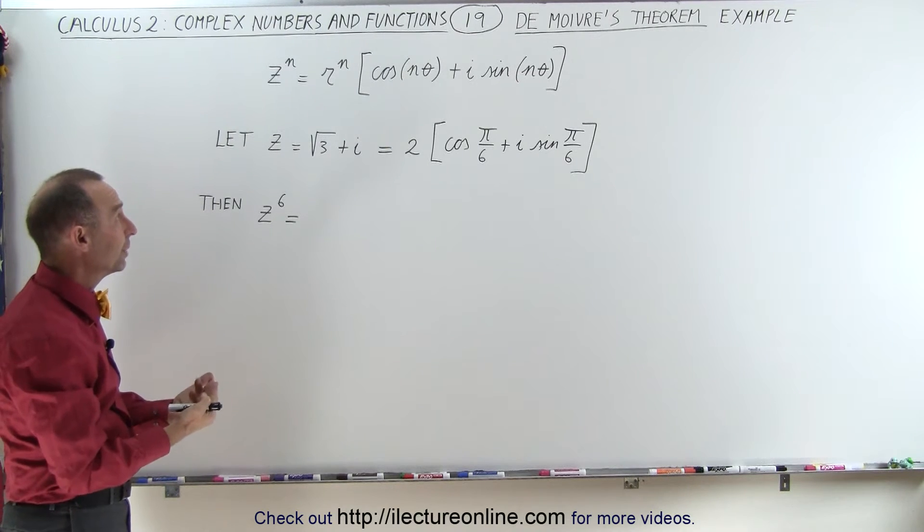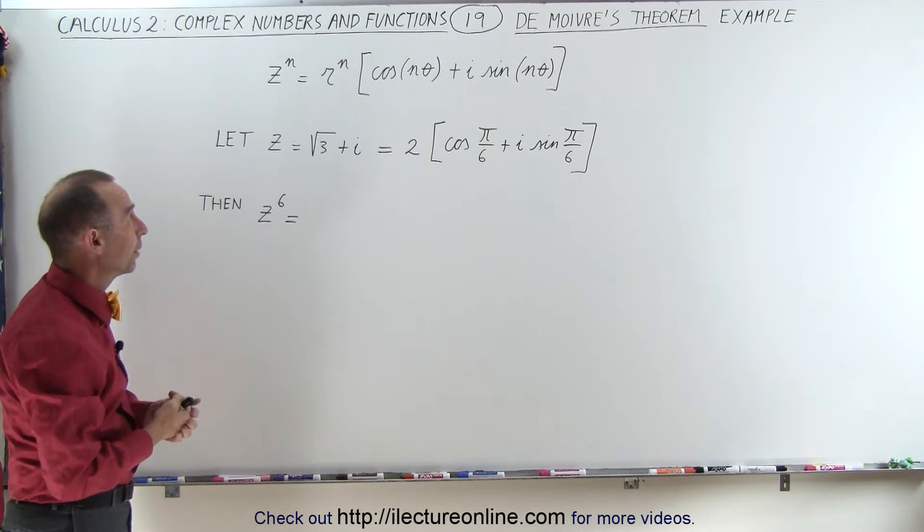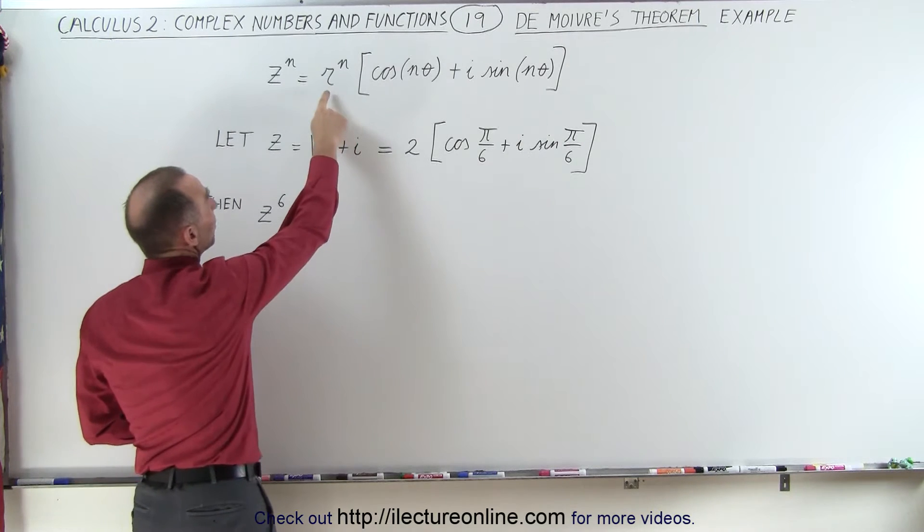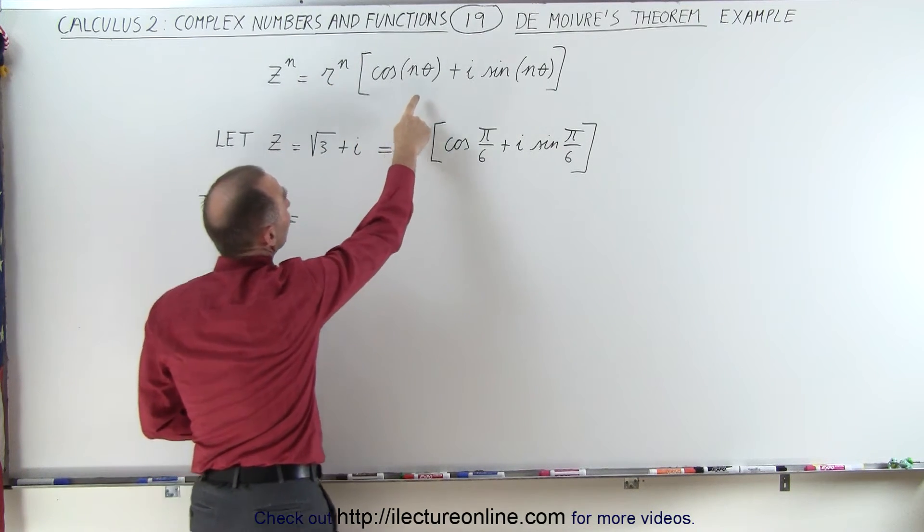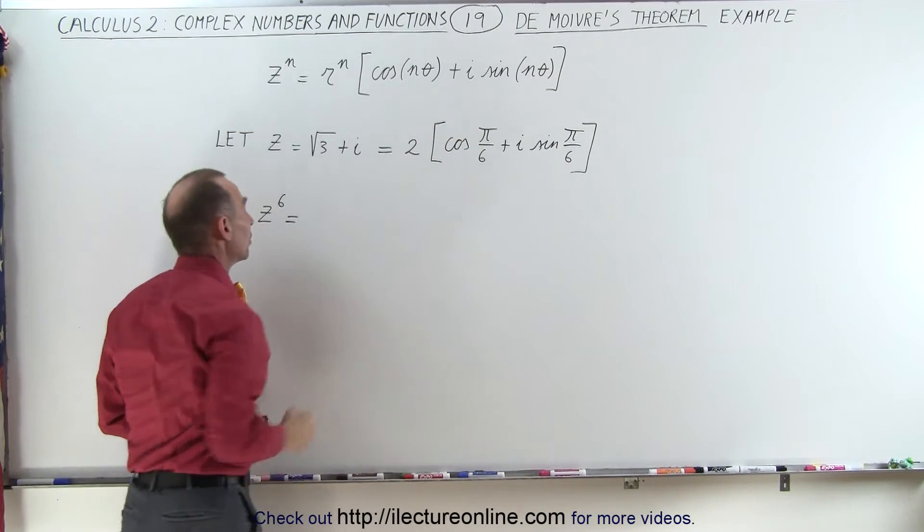But with De Moivre's theorem, it's very simple. All we have to do is simply take the modulus, raise it to that power, to that exponent, and then simply multiply each of the angles times the exponent.